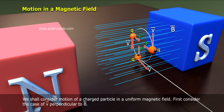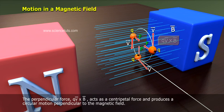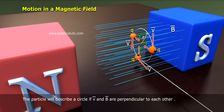We shall consider motion of a charged particle in a uniform magnetic field. First consider the case of V perpendicular to B. The perpendicular force Q V cross B acts as a centripetal force and produces a circular motion perpendicular to the magnetic field. The particle will describe a circle if V and B are perpendicular to each other.